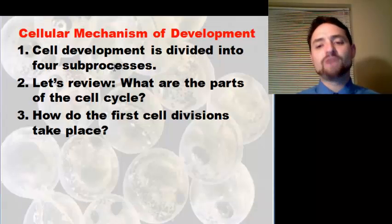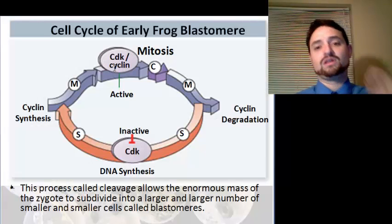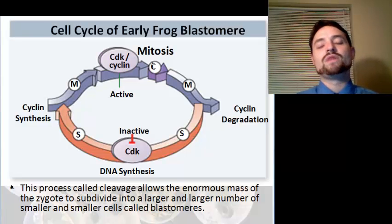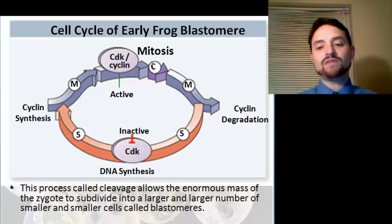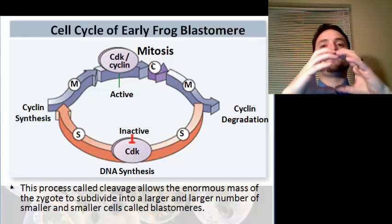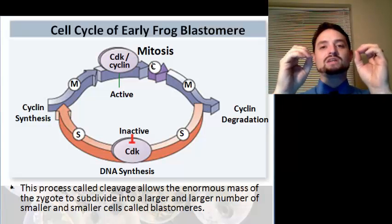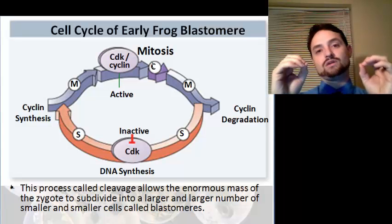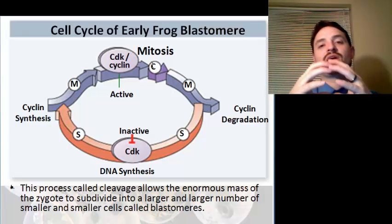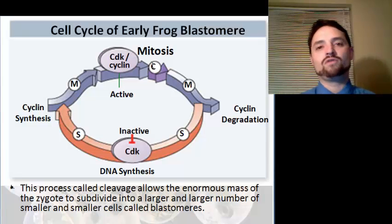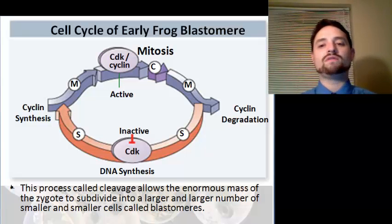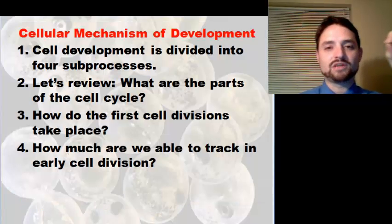How do the first cell divisions take place? They occur similarly but leave out the growth phases. This process is called cleavage, and it allows the enormous zygote to subdivide into larger and larger numbers of smaller and smaller cells called blastomeres. You end up with a ton of little cells without going through growth phases — the cell stays about the same size while the cytoplasm is divided over and over, skipping G1 and the DNA synthesis phase.